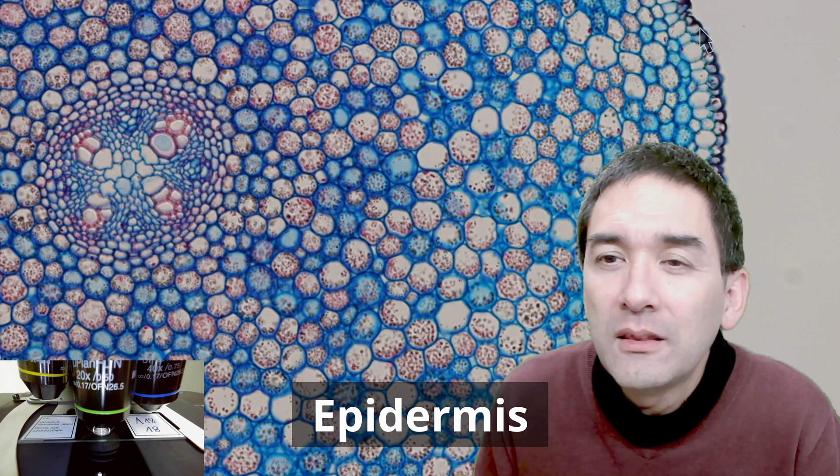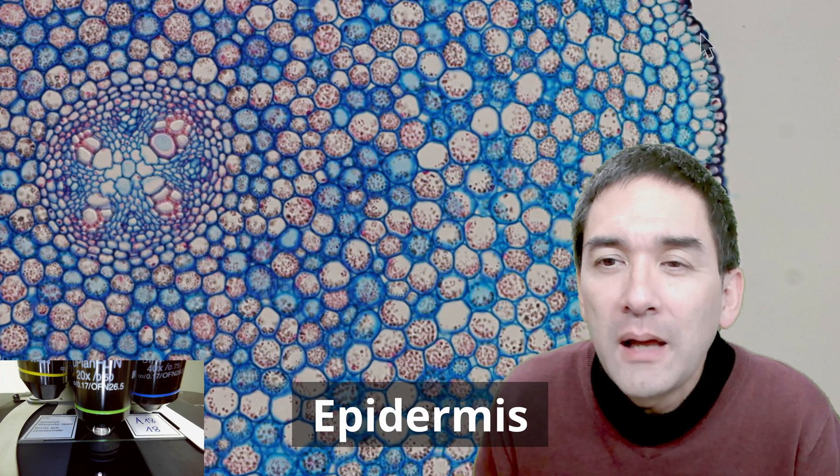Here right above my head you can see the arrow there. This is referred to as the epidermis and it's a thin layer of cells and this cell layer holds everything together and protects the central part.